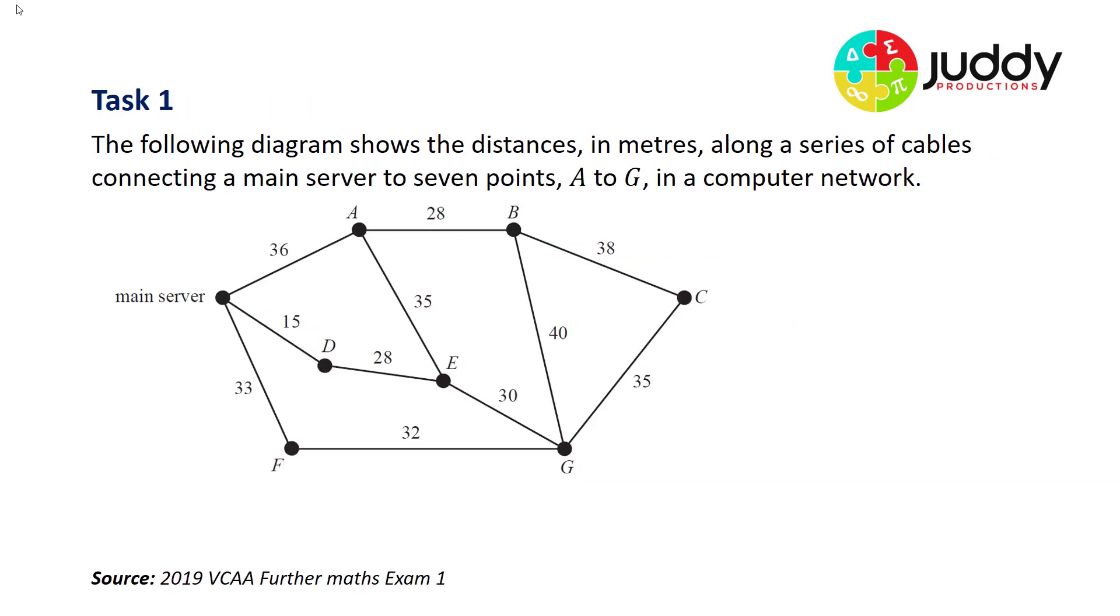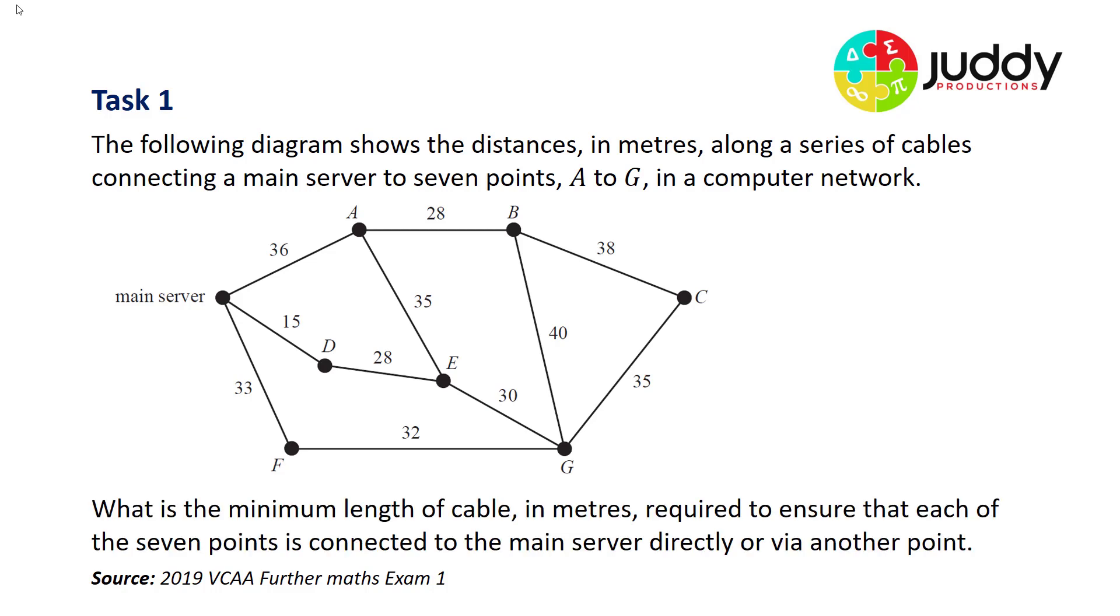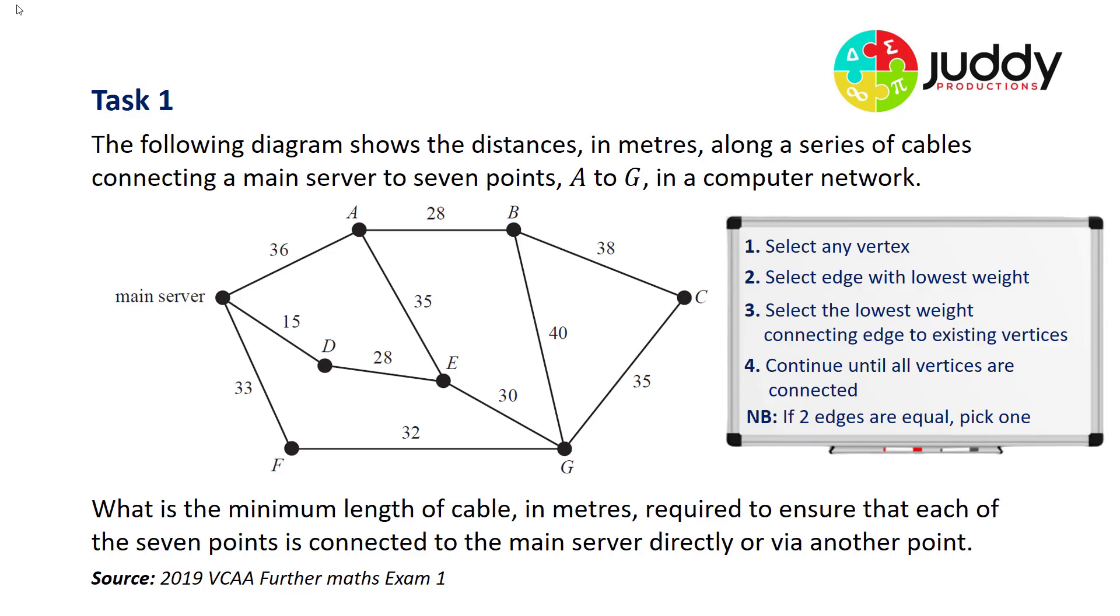Let's look at three examples. Task number one, the following diagram shows the distances in meters along a series of cables connecting a main server to seven points, A to G, in a computer network. So here we have our weighted network. The question is, what's the minimum length cable in meters required to ensure that each of the seven points is connected to the main server directly or via another point? So here's our rules for Prim's algorithm. First of all, we need to select a vertex. In this case, I'll choose the main server as my starting vertex, as the question states that all points have to be connected to the main server.